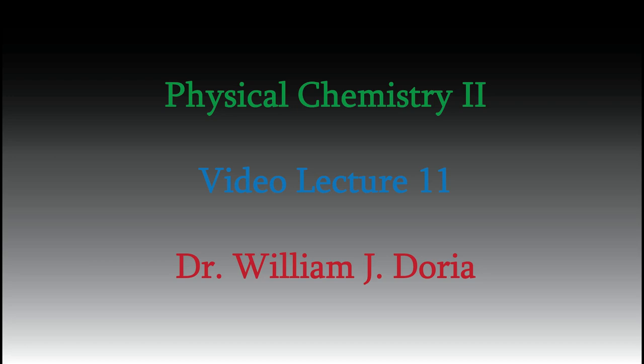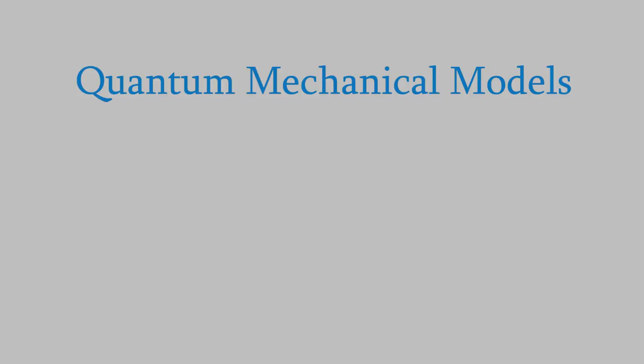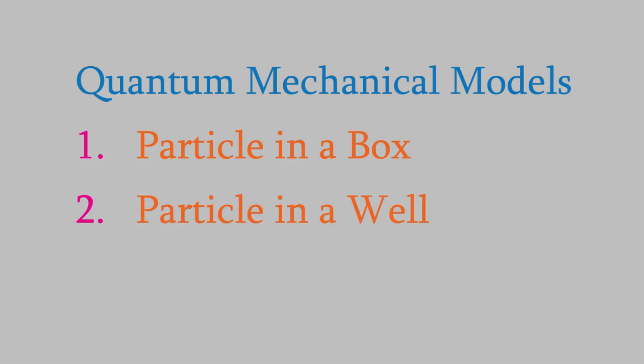Hi, and welcome back to my series of videos for Physical Chemistry 2. The last time we met, we started looking at the third of the models that we used to understand how to apply the ideas of quantum mechanics to real chemical systems. The first two models were the particle in a box and the particle in a well, which we talked about in videos 7 and 8. The third model is the rigid rotor, which is a good model for diatomic molecules.